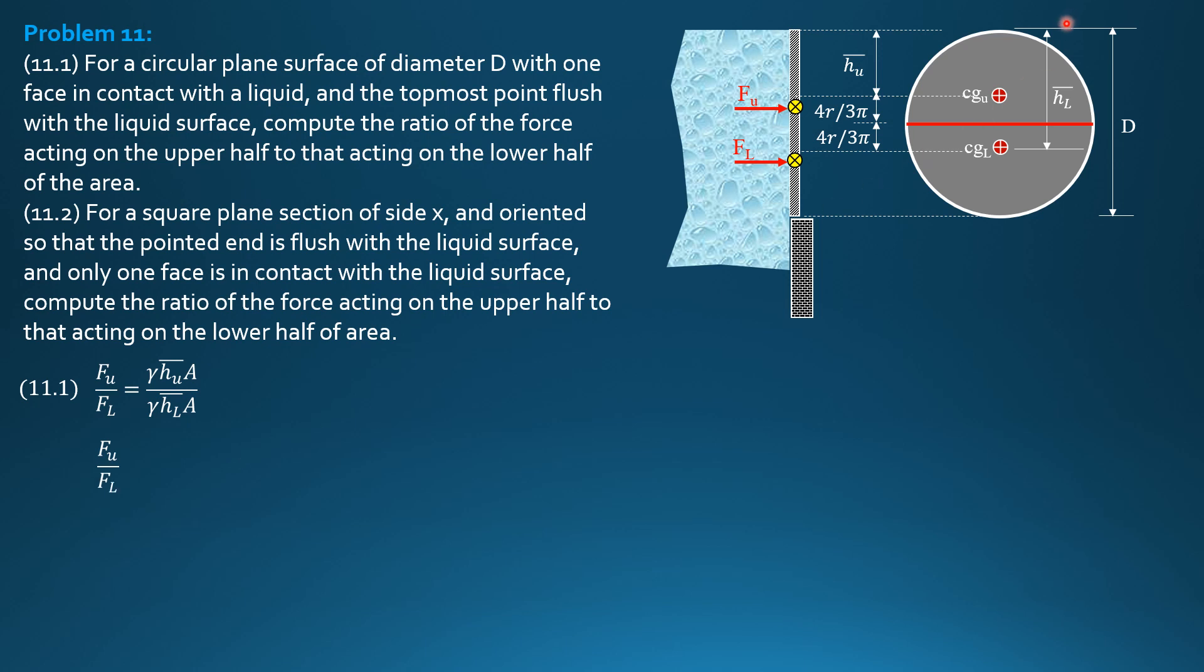Barred h upper is r minus 4r over 3pi, while barred h lower is r plus 4r over 3pi. Cancel out r, then use your calculator. The ratio can now be computed. It is equal to 0.4041.